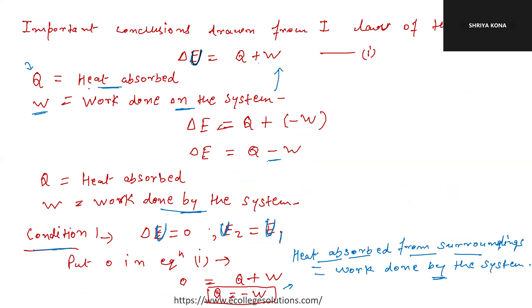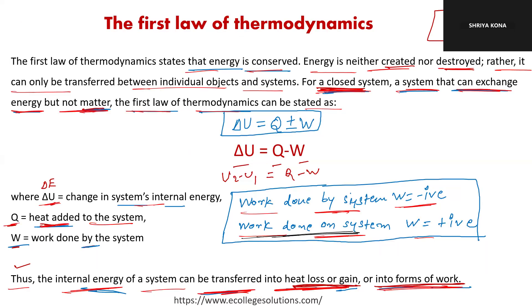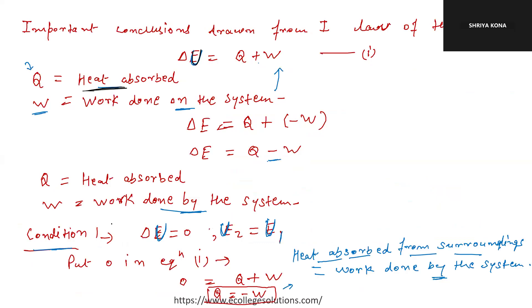Q is positive — that is heat added to the system. No change there. W is work done on the system because W is positive.